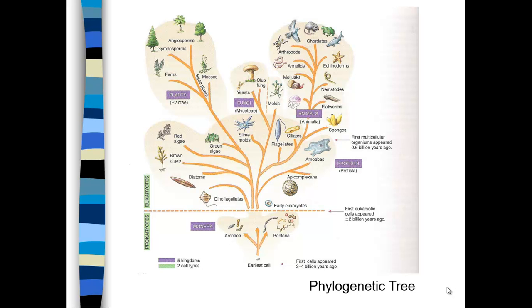This slide is split up into five kingdoms, which is not really correct. Instead, we talk about three domains, which are bacteria, archaea, and eukarya. In the domain eukarya, there are four kingdoms: protists, plants, animals, and fungi. We don't really use the term monera anymore for prokaryotes. We go to a higher level than kingdoms and talk about domains, where archaea and bacteria are distinct domains from eukarya.